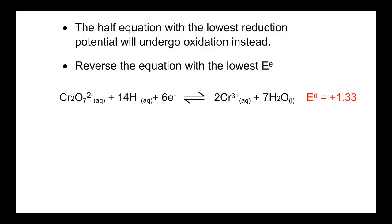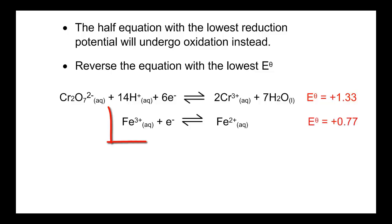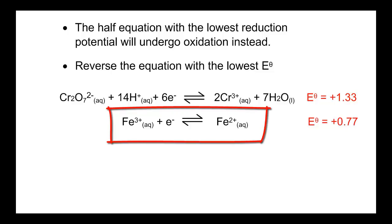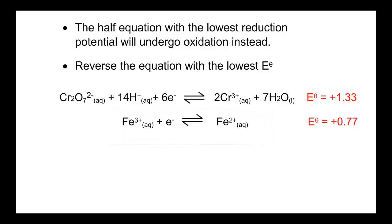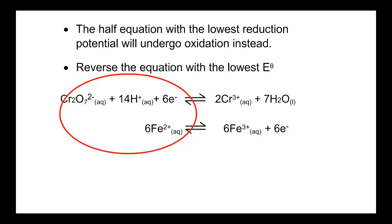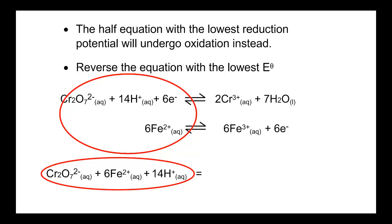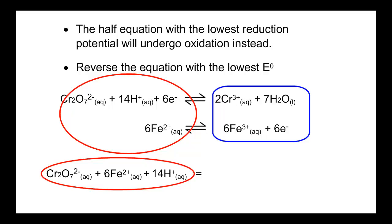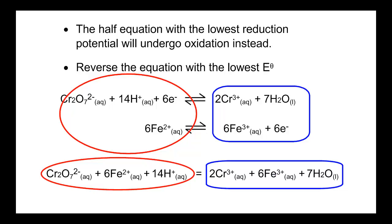The half-equation for the reduction of dichromate ions stays as is, because it has the larger reduction potential, and you reverse the other one. So we'll bring the Fe2+ ions to the left-hand side, and the Fe3+ and electrons to the right-hand side. It's necessary to have the same number of electrons in both half-equations, so that bottom half-equation will need to be multiplied by 6 right across, in order to balance electrons. Then add the left-hand sides of both together and the right-hand sides of both together. Having balanced the electrons, we can now cancel them and simply add the two right-hand sides together.